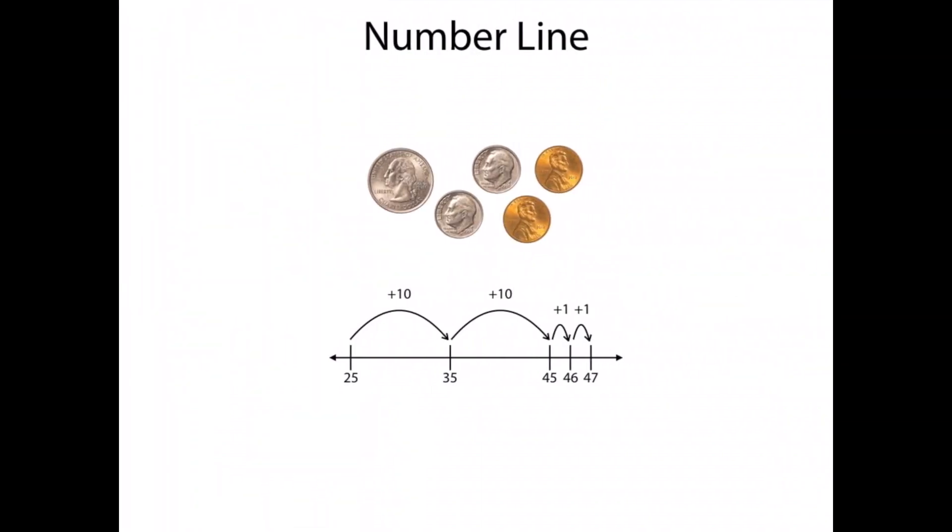Another strategy would be using a number line, which is similar to that skip counting, where I'd start at 25 for the 25 cents, do a jump of 10 for the dime, another jump of 10 for the other dime being 45, and then adding two pennies, 1, 2 for 47 cents.